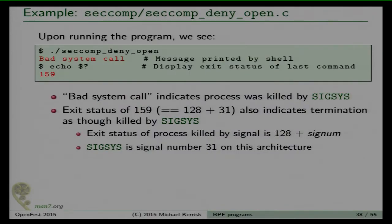When this program — called seccomp_deny_open — is run, it prints 'bad system call' because the shell detected the program was killed by a SIGSYS signal. SIGSYS is the way the kernel kills a program when it disallows a system call, and the shell recognizes that signal as corresponding to 'bad system call.'